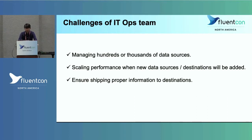The second challenge is performance. When new data sources or destinations are added, you need to scale the performance of FluentD and FluentBit to prevent loss of data. The third challenge is shipping — ensuring proper information is shipped to the destinations. A raw event from a data source might contain unnecessary information; endpoints might send chatty debug information, or they might send messages which include sensitive information.